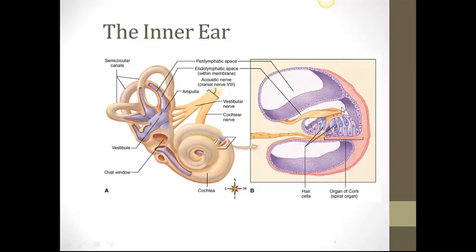B shows a section of the membranous cochlea and the hair cells — these blue little hair cells — and the organ of Corti, or the spiral organ, which detects sound and sends the information through the cochlear nerve. The organ of Corti is this whole entire unit and sends messages to the nerve, as you can see here, through the cochlear nerve. The vestibular and cochlear nerves join to form the eighth cranial nerve.